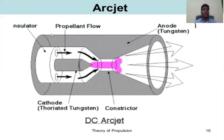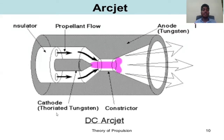Arc jet diagram: this is the insulator, propellant flow, anode, constrictor, and cathode.